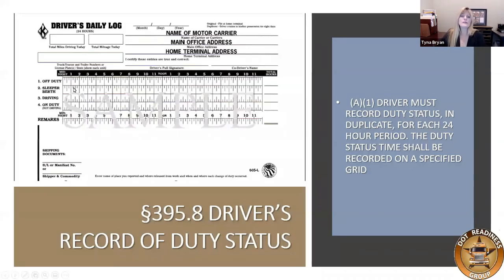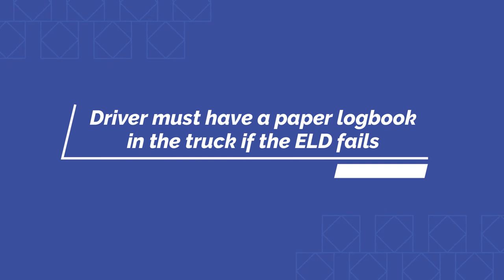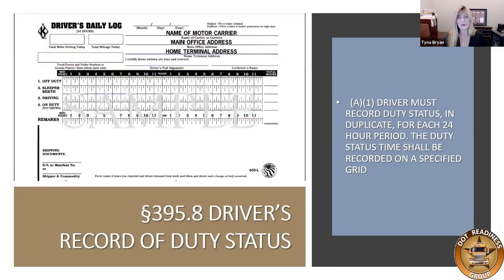I have an example from JJ Keller — they have logbooks that they sell. Now whenever the ELD rule was put in place, you're not going to see logbooks as much, but you still have to have paper logbooks in the truck — at least 30 days' worth. Have one logbook in each truck because you have to have them if the ELD fails. That is a requirement: blank logs must be in the truck at all times. I prefer loose leaf logs, especially for the ELD system mandate.